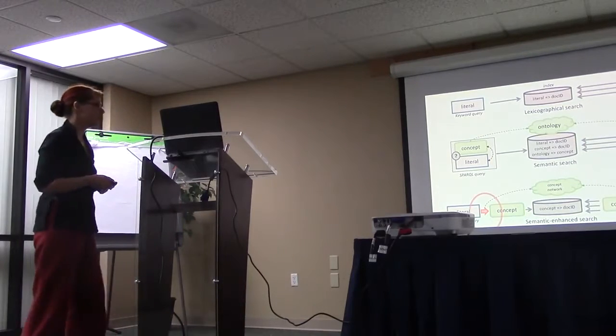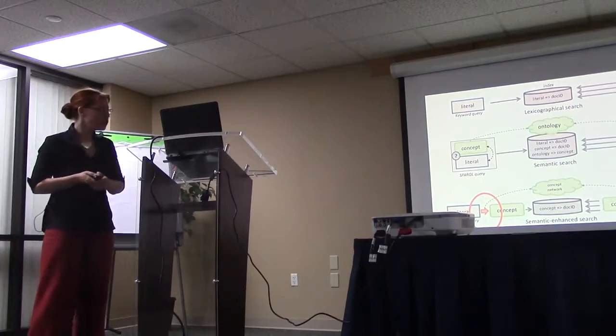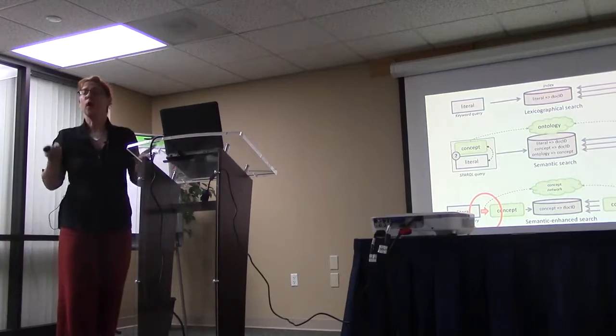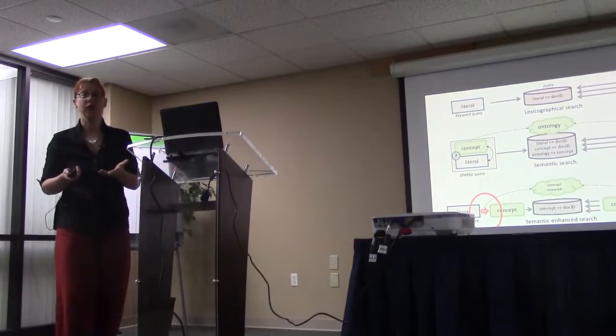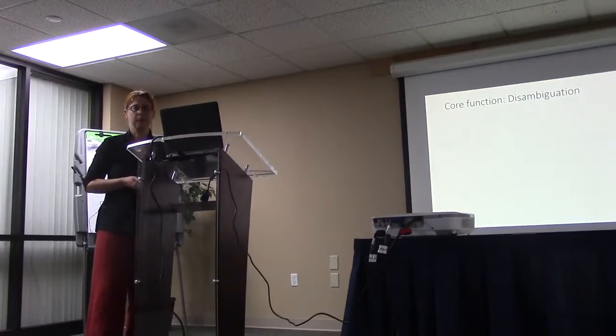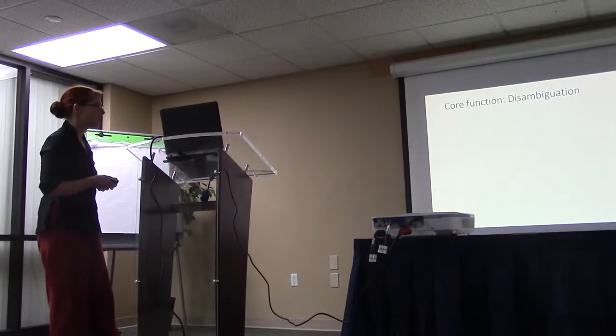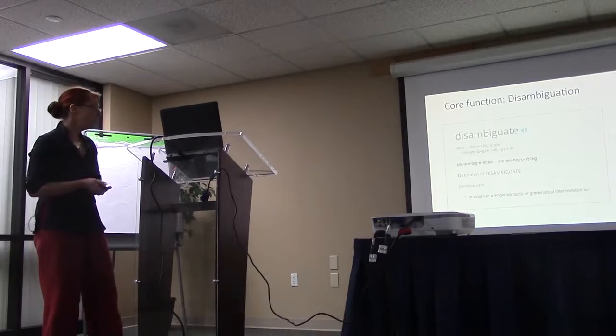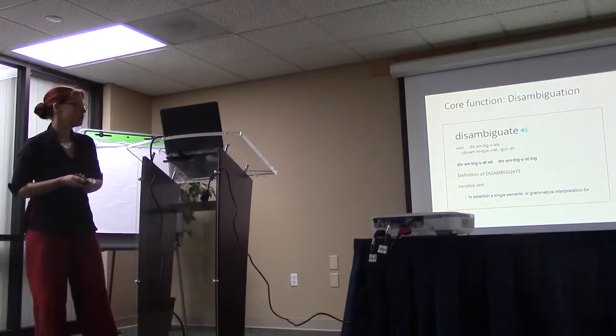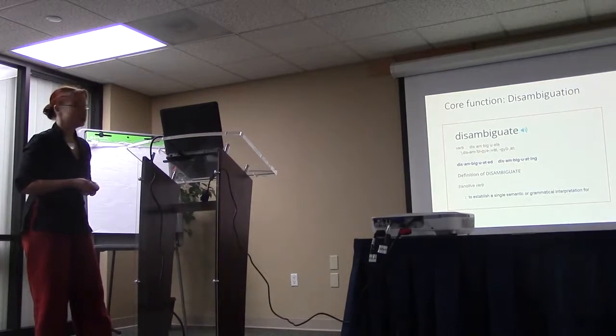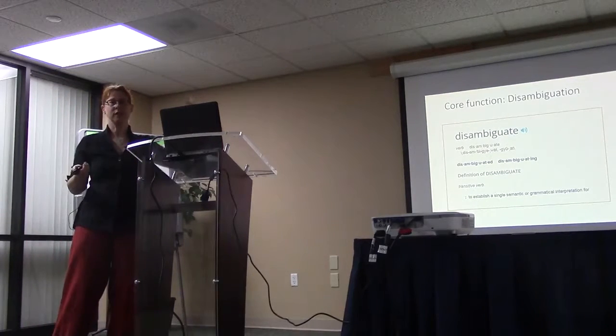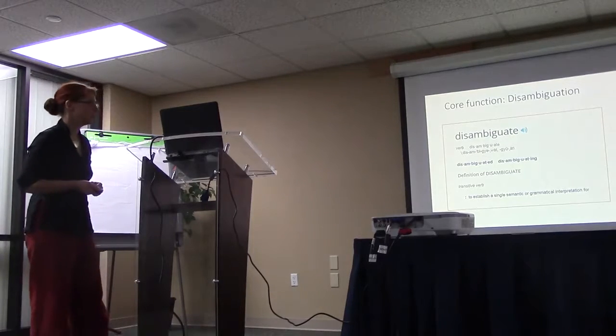So the really interesting bit really happens over here. How do we translate between the literals and the concepts? Basically how do we find out what a word means? I've just introduced that all these problems appear in the search because it's not quite clear what you mean with the word, and I'm just saying, we just translate that into a concept. That's what I basically am talking about. How do we do this? So the core function for our system is disambiguation. Disambiguation is basically the translation I just talked about. So two kinds of translations. We translate the query and we translate the actual documents.